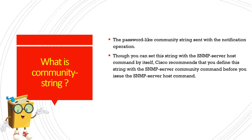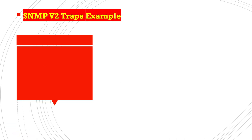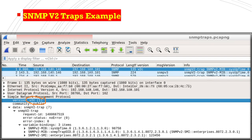A community string is a password-like string used in SNMP trap operations. It is used by the SNMP manager to communicate with the SNMP agent and is also included in traps. It is a predefined string that needs to be configured on both sides.